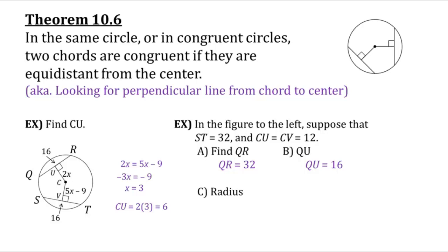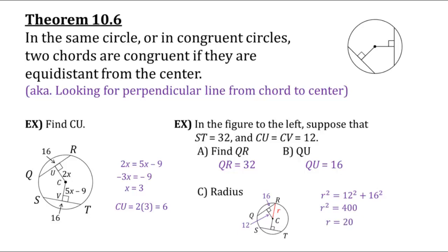Part C asks for the radius of the circle. Since there's no radius drawn, I'll redraw the picture and add a radius from C to R, calling it little r. This creates a right triangle, so we use the Pythagorean theorem. CU equals 12 and QU equals 16. So r squared equals 12 squared plus 16 squared. That gives r squared equals 400, and taking the square root gives r equals 20. So that is everything for tonight — see you on the next video.